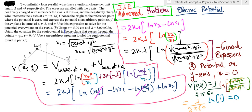Good morning and welcome to this numerical, which is again on the topic of electric potential. Going back to the previous chapter on electric field, you did calculate the electric field due to a long parallel wire having uniform charge of lambda and minus lambda, using Gauss's theorem and the concept of symmetry.